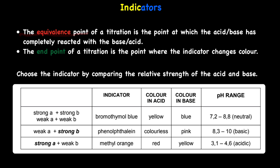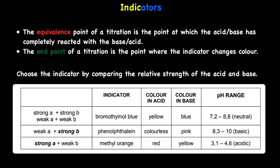The definition I want us to look at is the equivalence point. The equivalence point of titration is the point at which the acid or base has completely reacted with an acid or a base. To see that they've completely reacted, you look at the end point. The end point of titration is when the indicator changes color. Go to my previous video for more on titration.